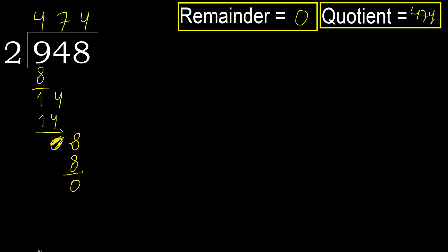Ok, 0. Therefore, 948 divided by 2 is 474.